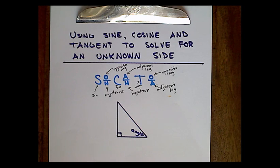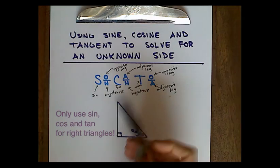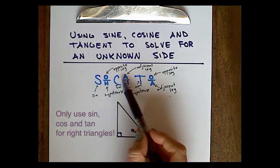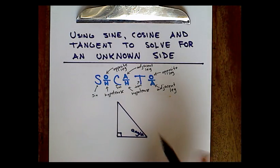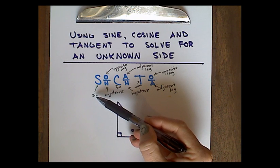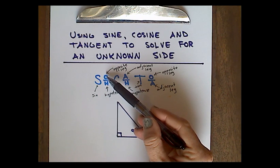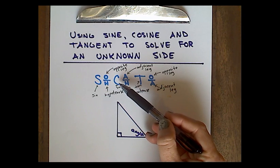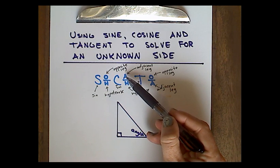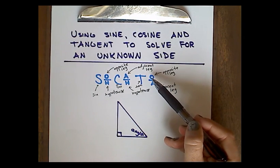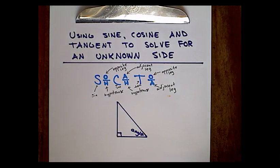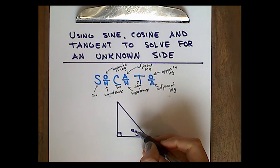Each of these are functions, and they all represent a ratio of side lengths in a right triangle. We use the mnemonic SOHCAHTOA to remember which ratio belongs with which function. The sine function represents the opposite leg over the hypotenuse, the cosine function represents the adjacent leg over the hypotenuse, and the tangent function represents the opposite leg over the adjacent leg. If you remember SOHCAHTOA, it's easy to remember the ratios.